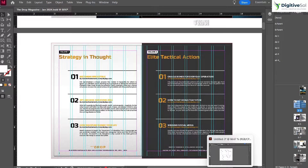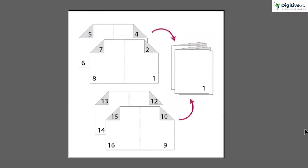Let me go through an image that explains what we are going to look at in this tutorial. As you can see in this image, whenever you design any ebook, magazine, or product catalog and send it for printing, if you have designed a document in A4 format it will be printed on a single A3 sheet divided into two parts — one A4 page on each half.